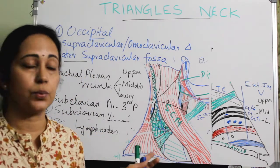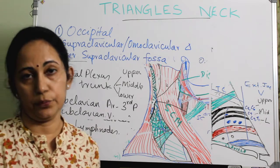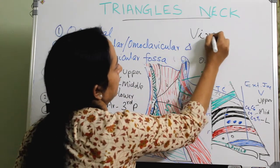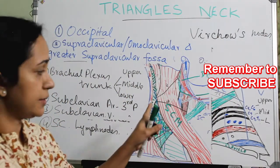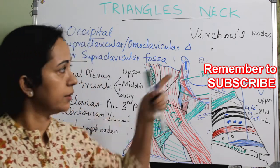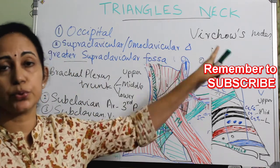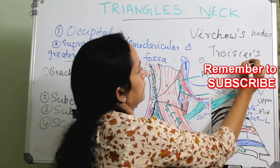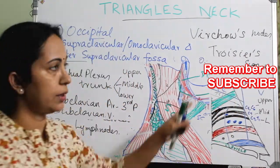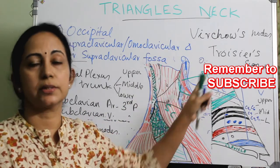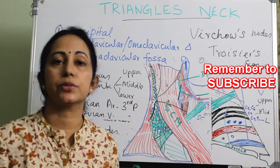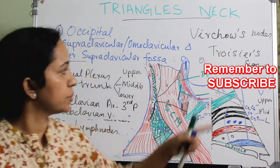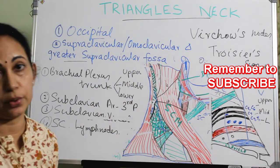Clinically, the most important feature is the enlargement of the supraclavicular lymph nodes. The left supraclavicular lymph nodes are also called Virchow's nodes. Enlargement of the left supraclavicular lymph nodes is called Virchow's nodes and is referred to as Troisier's sign positive. This enlargement is seen in cases of malignancies of certain abdominal structures, especially the stomach and colon.